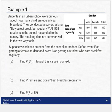Let's try an example of this. Students in an urban school were curious about how many children regularly eat breakfast. They conducted a survey asking, 'Do you eat breakfast regularly?' All 595 students in the school responded to the survey. The resulting data are summarized in the two-way table. Suppose we select a student from the school at random. Define event F as getting a female student, and event B as getting a student who eats breakfast.